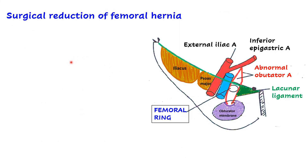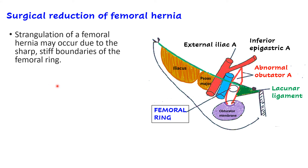Sometimes the hernia cannot be manually reduced and requires surgical reduction, especially when strangulated. Strangulation means the blood supply to the intestine is compromised. As the intestinal loops pass through the femoral ring, the surrounding rigid structures — bone posteriorly, ligament medially and anteriorly — compress the contents, compromising blood supply. Strangulation of femoral hernia occurs due to the sharp, stiff boundaries of the femoral ring.